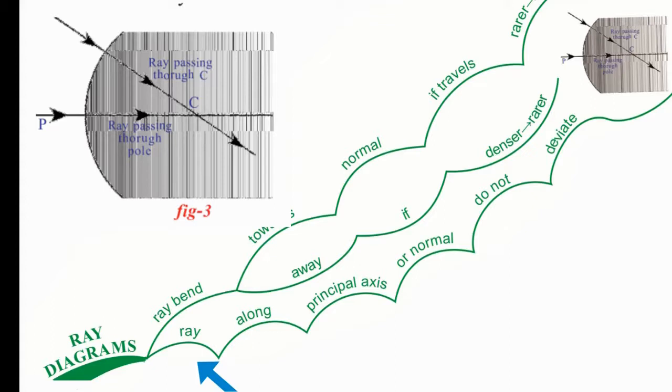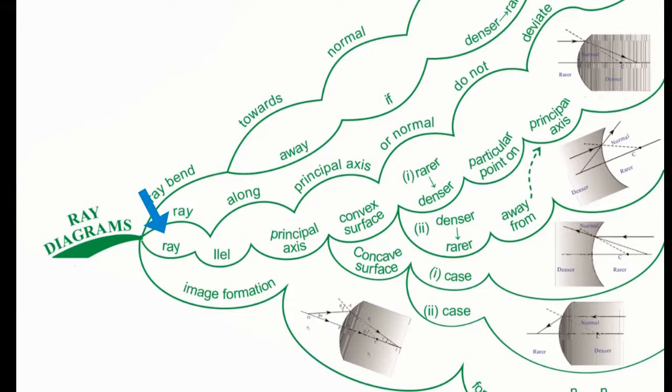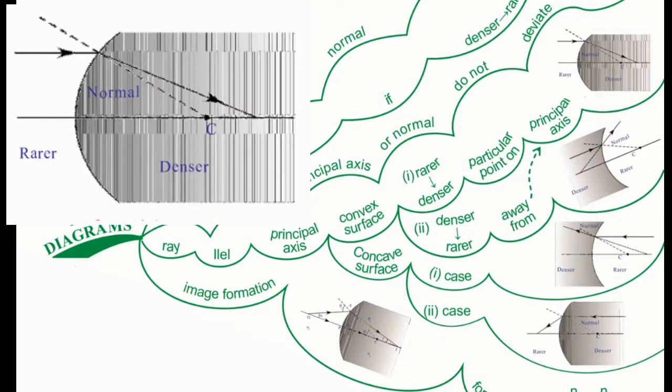If a ray is parallel to principal axis, then for convex surfaces, if the ray is from rarer to denser medium, it will meet the principal axis at a particular point. You can see it in the ray diagram.